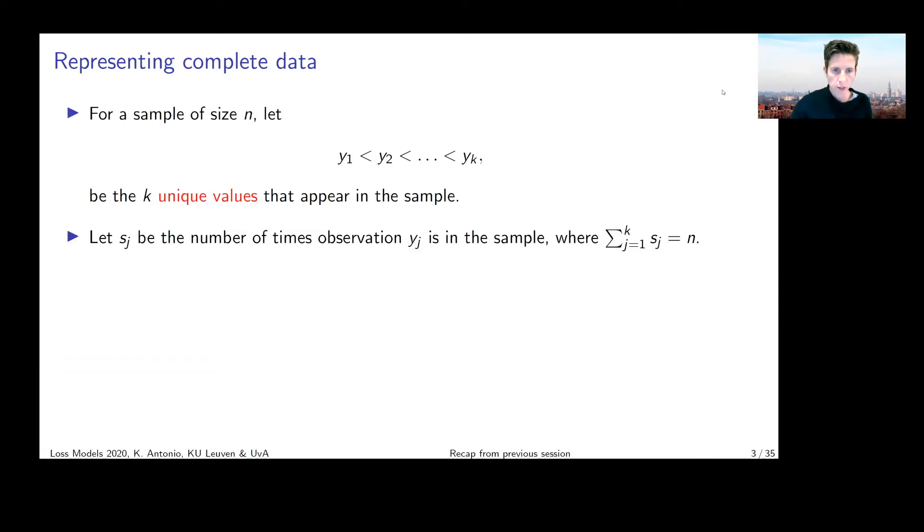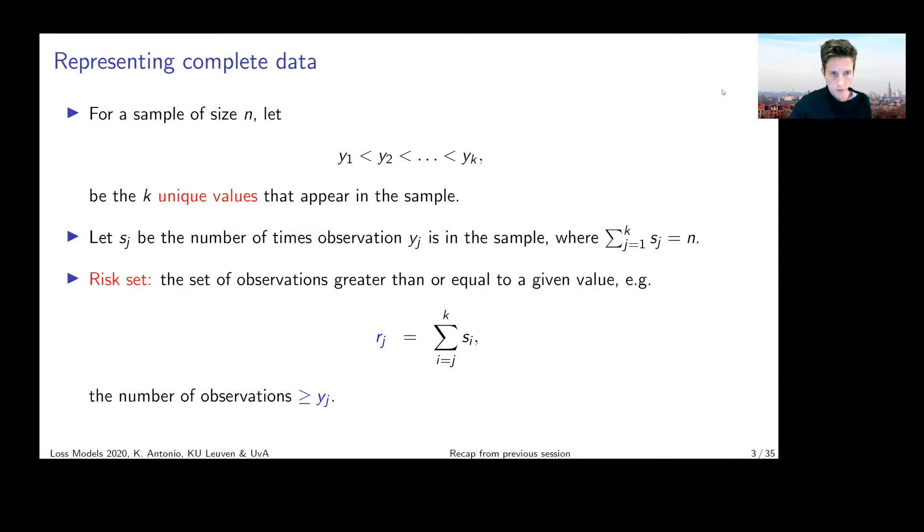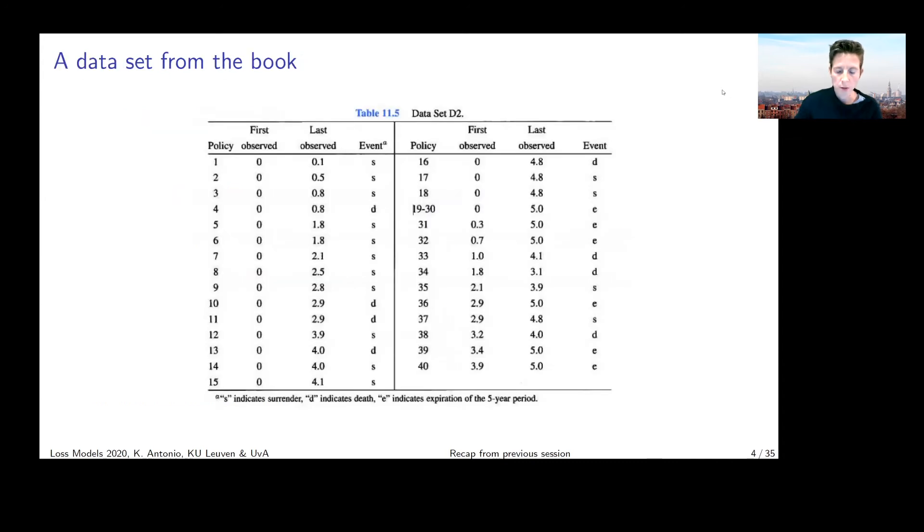Here is the notation which I gave a recap of using the iPad. The data I want you to picture is the following data set from the book, introduced in chapter 11. We call it data set D2, and it contains information on 40 policyholders.